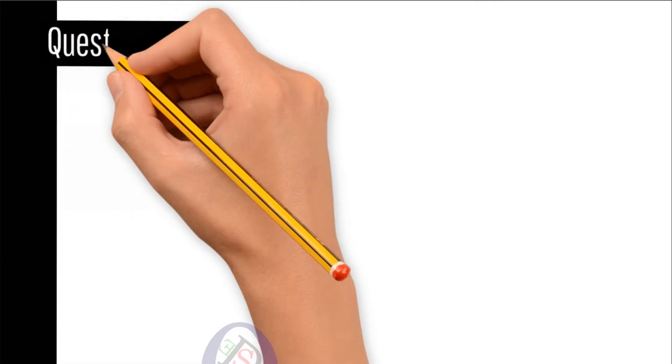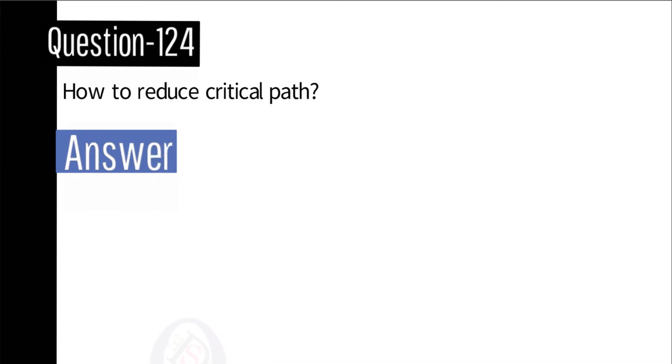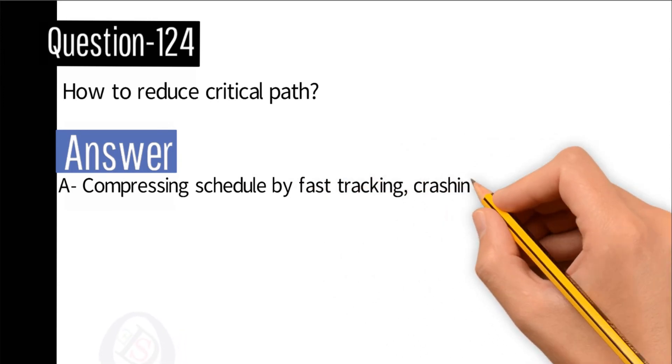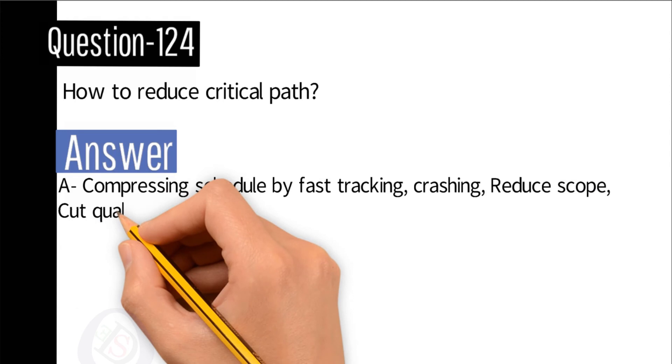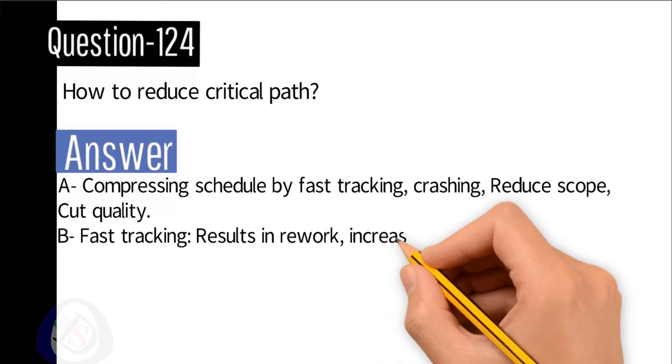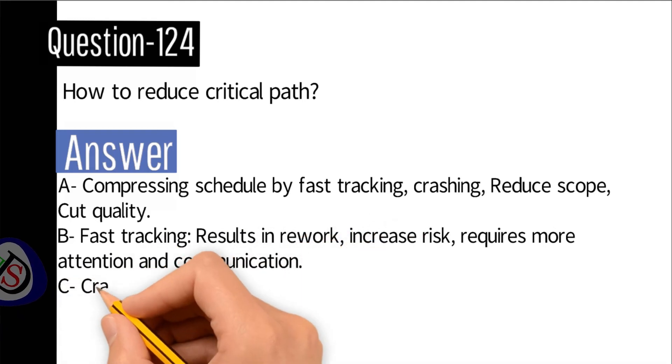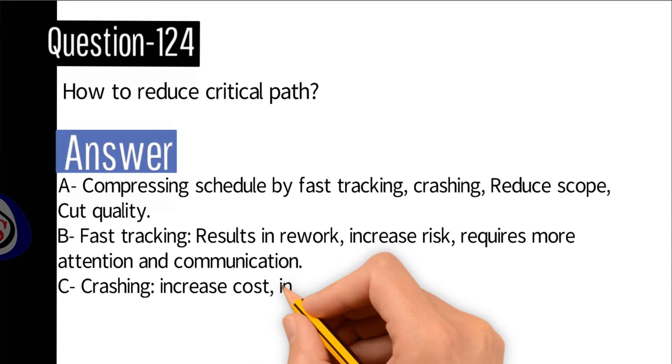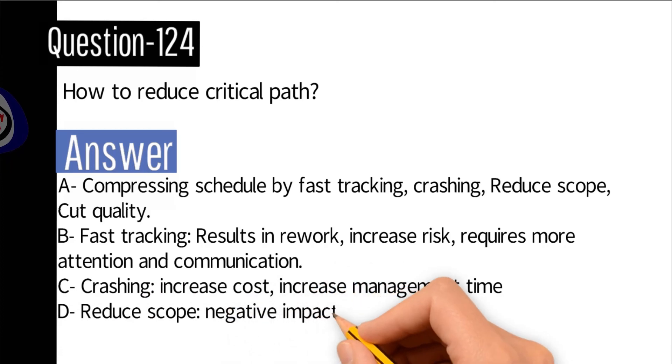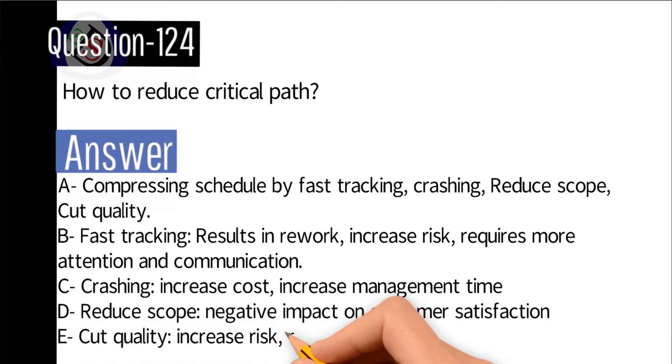Question number 124: How to reduce critical path? Answer: A) Compressing schedule by fast tracking, crashing, reduce scope, cut quality. B) Fast tracking results in rework, increased risk, requires more attention and communication. C) Crashing increases cost, increases management time. D) Reduce scope has negative impact on customer satisfaction. E) Cut quality increases risk, requires good metrics.